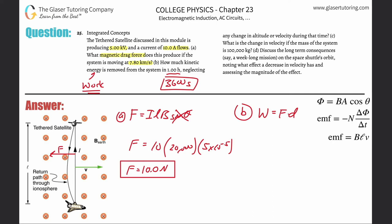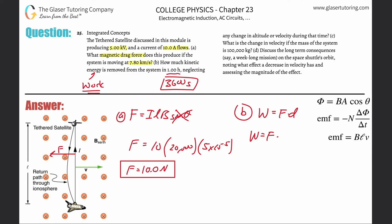This is a blast from the past. The energy removed equals the work done. We know the force, and we need the distance. Since we're given velocity and time, distance is simply velocity times time: d = v × t. Make sure everything is in the right units.